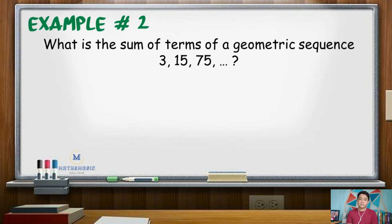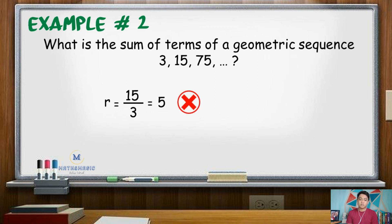As another example, what is the sum of the terms of the geometric sequence 3, 15, 75, and so on? Solving for the common ratio, r equals 15 divided by 3, which gives 5. Since this common ratio does not satisfy the condition that r must be between negative 1 and 1, we can say that the sequence has no finite sum.